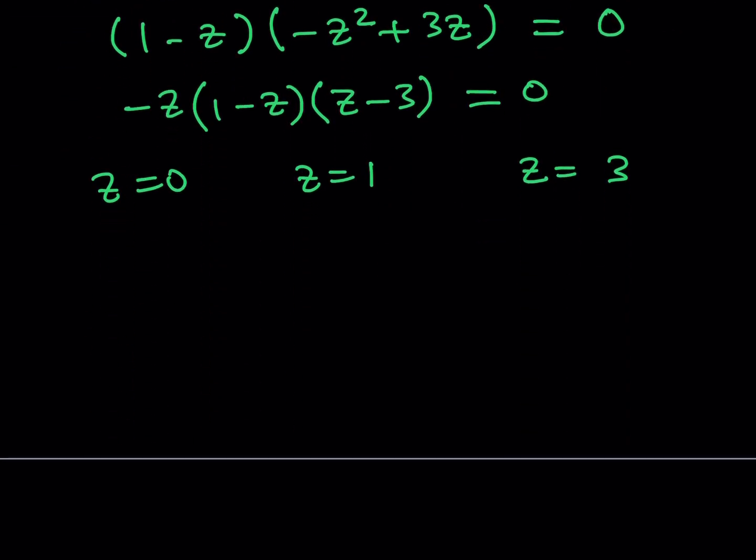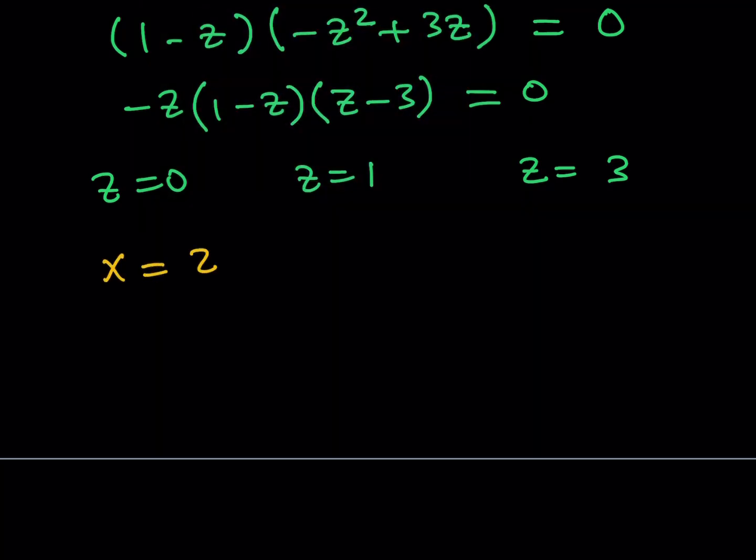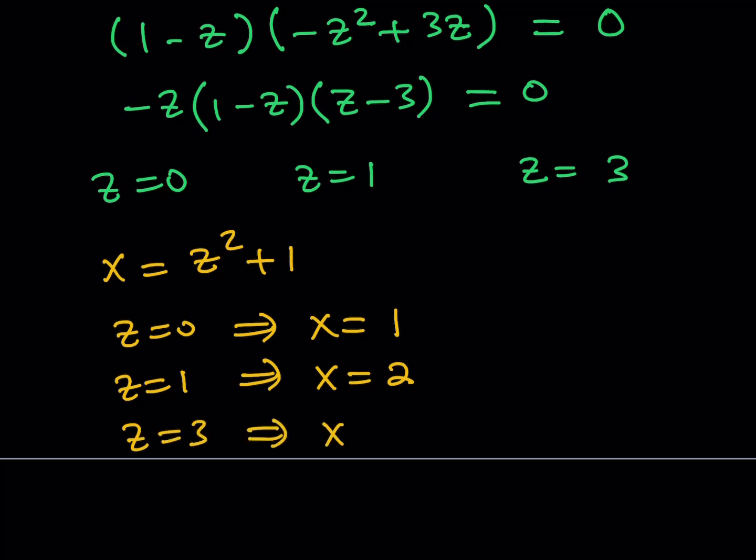x is equal to z squared plus 1. Let's go ahead and write that down. And then by substitution, we can basically find each x value here. For example, if z is equal to 0, then x is going to be 1. If z is equal to 1, then x is going to be 2, because you have to square and add 1. And if z is equal to 3, 3 squared plus 1 is going to equal 10.